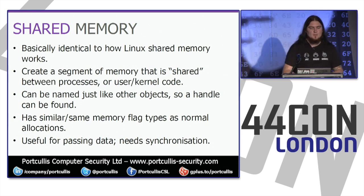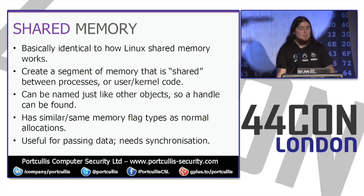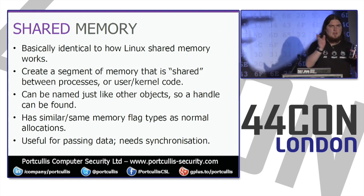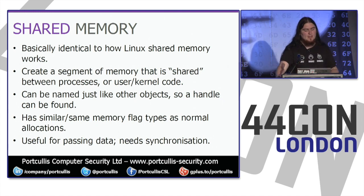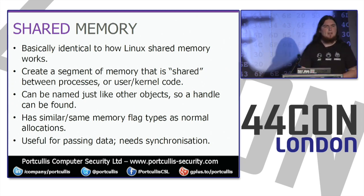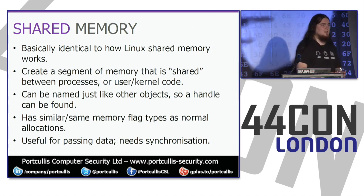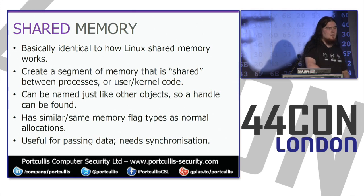Speaking of shared memory: shared memory in Windows works quite similarly to Linux. You create a segment of memory shared between processes, you have a handle or name to get a handle from, and if you can share it between user mode and kernel code, you can share data through that shared memory section. It can be named just like other objects, and it has memory flags similar to normal allocations — readable, writable, executable (though you probably don't want executable shared memory). But you need to synchronize, otherwise you might read while somebody else is writing and your program crashes.